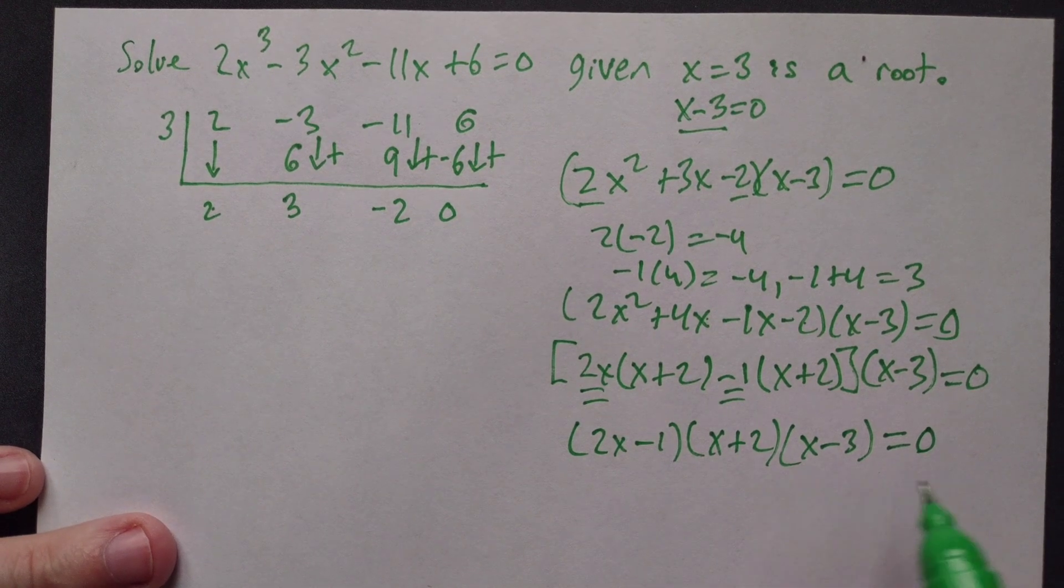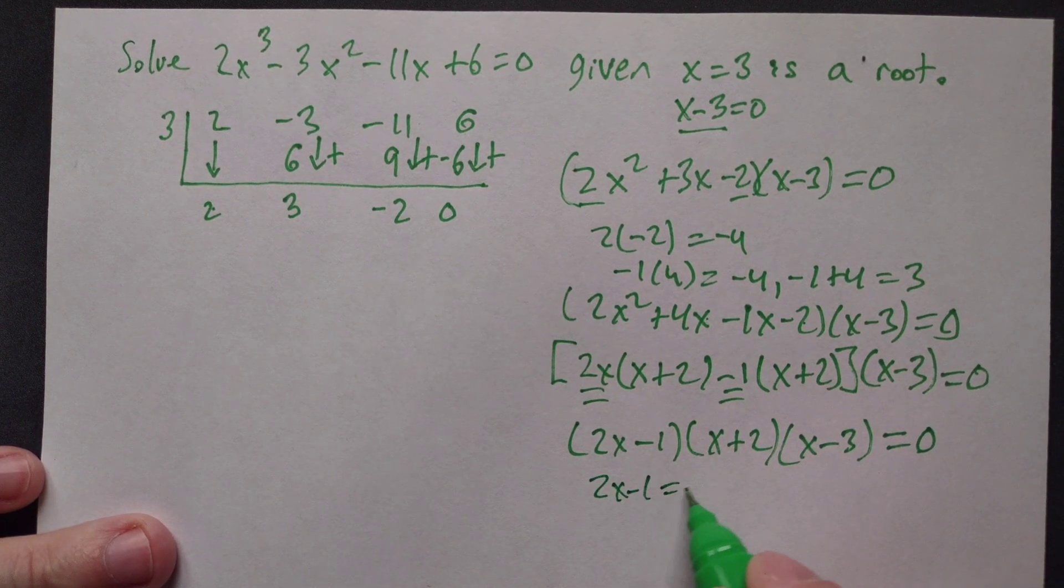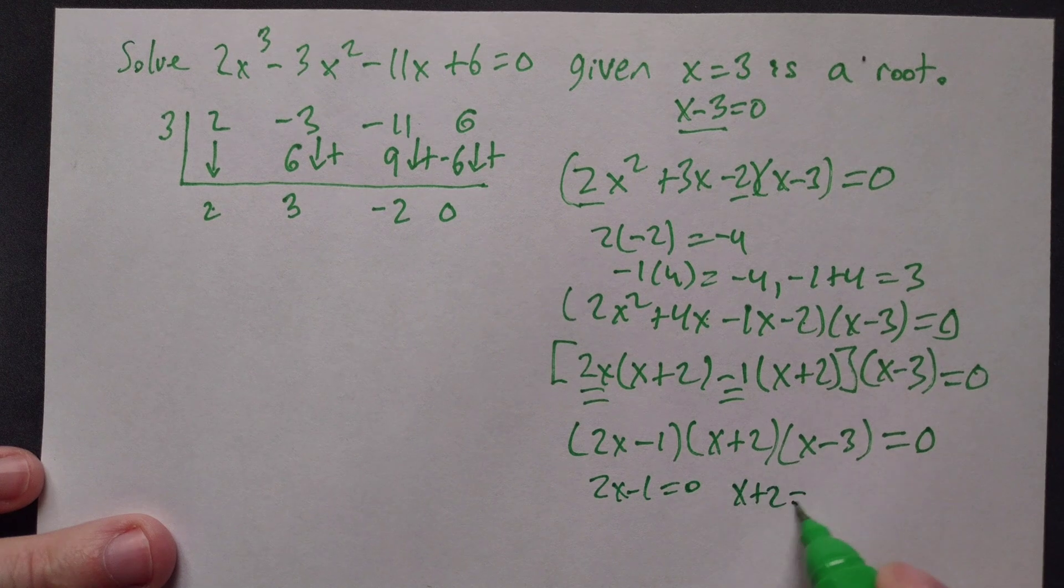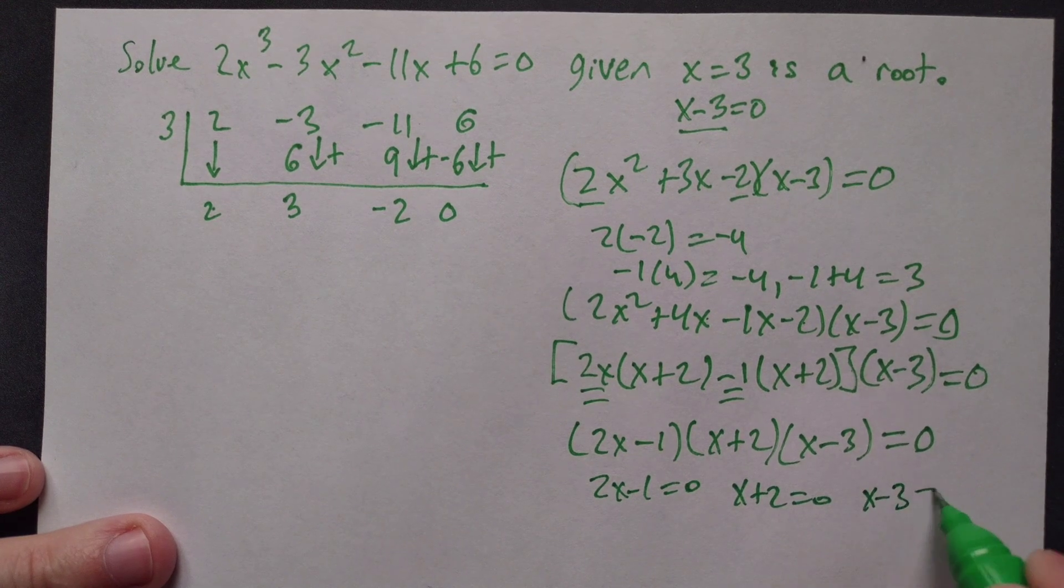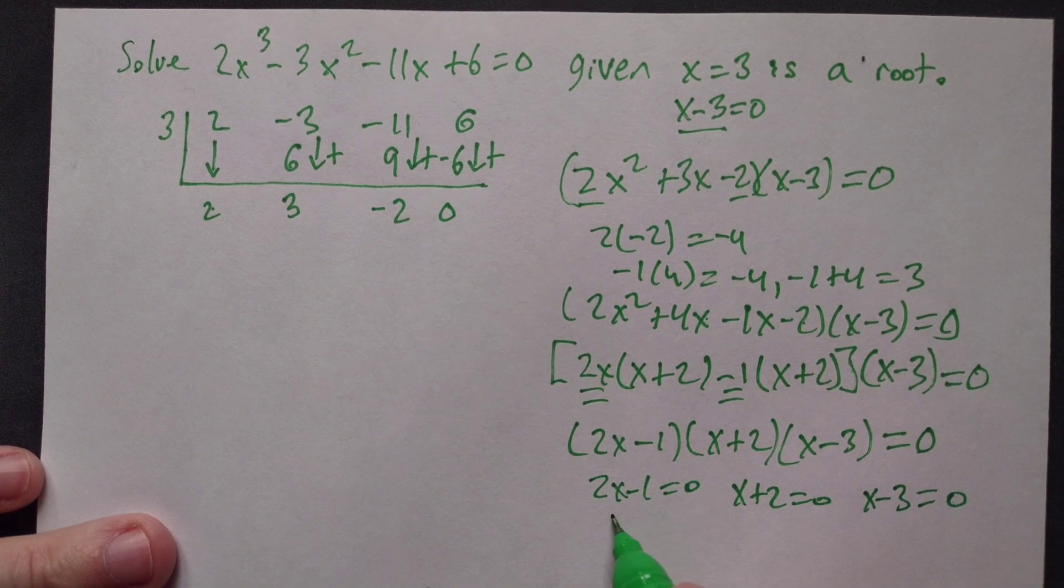Set each factor to 0 and solve: 2x - 1 = 0, or x + 2 = 0, or x - 3 = 0.